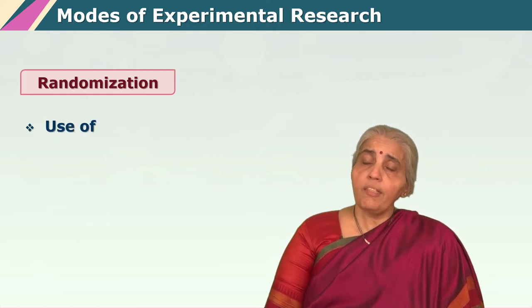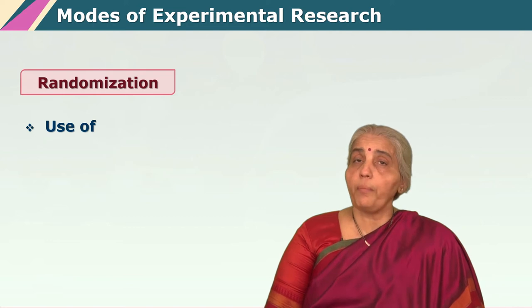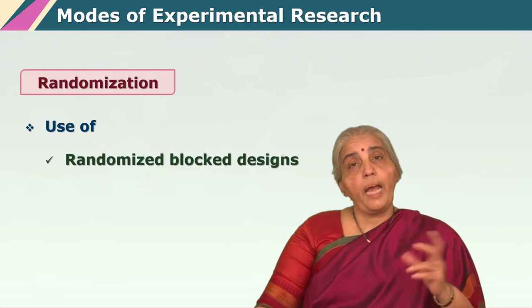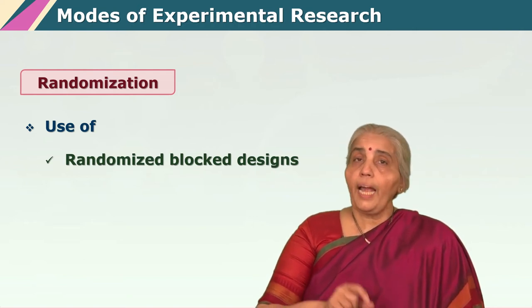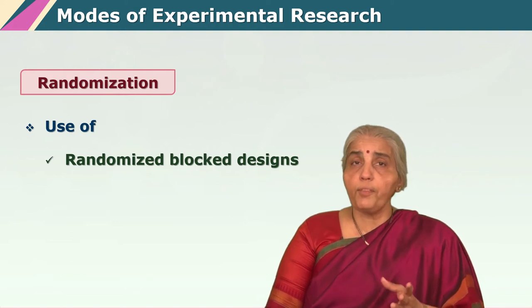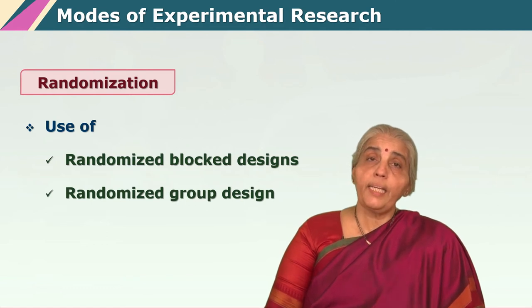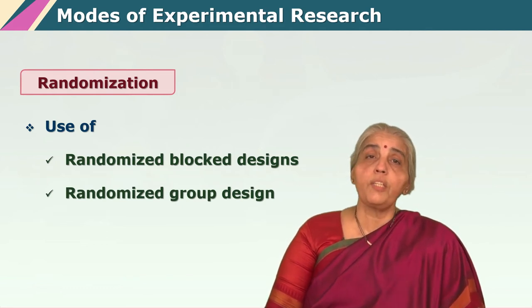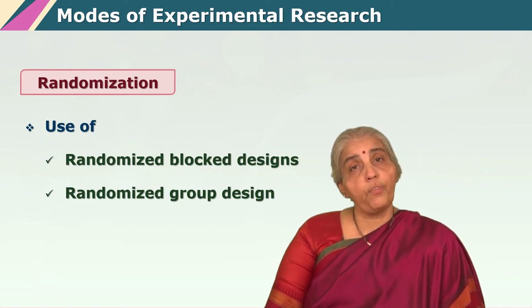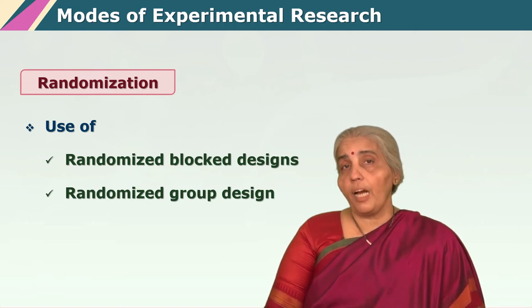In such instances one can use what are called randomized block designs or randomized group designs, where I can take an entire block of subjects at one shot and put it into one condition and take the other block and put it into the other condition. For example, if I have a division of students, division A and division B, once again one must be very clear that these divisions were not in the first place based on any kind of ability or any kind of mode of selection, because then you have your bias creeping into your experiment right from the start.